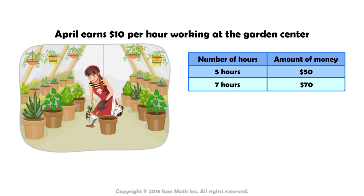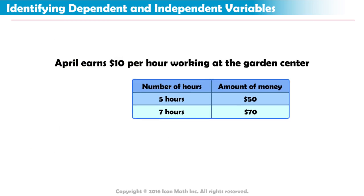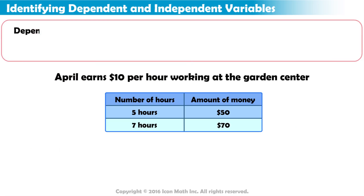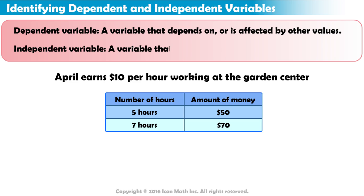In this lesson, we will identify dependent and independent variables. A dependent variable is a variable that depends on or is affected by other values. An independent variable is a variable that is not changed by other values.